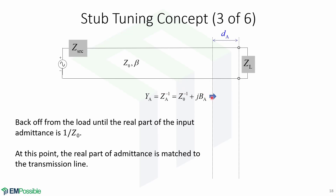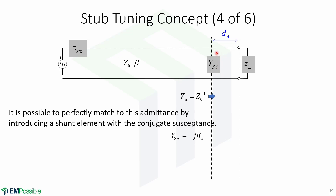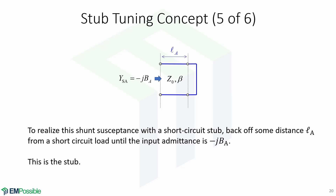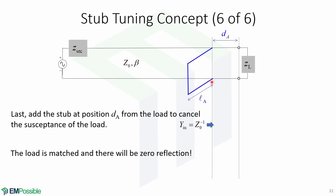At this point, the real part of the admittance is matched to the transmission line. Now it is possible to match this admittance by introducing a shunt element with the conjugate susceptance. In order to realize this shunt susceptance with a short-circuit stub, we need to back up some distance lA from a short-circuit load until the input admittance is −jBa. Finally, we will add the stub at position dA from the load to cancel the susceptance of the load with this length. Now we will have the load matched and there will be zero reflection.